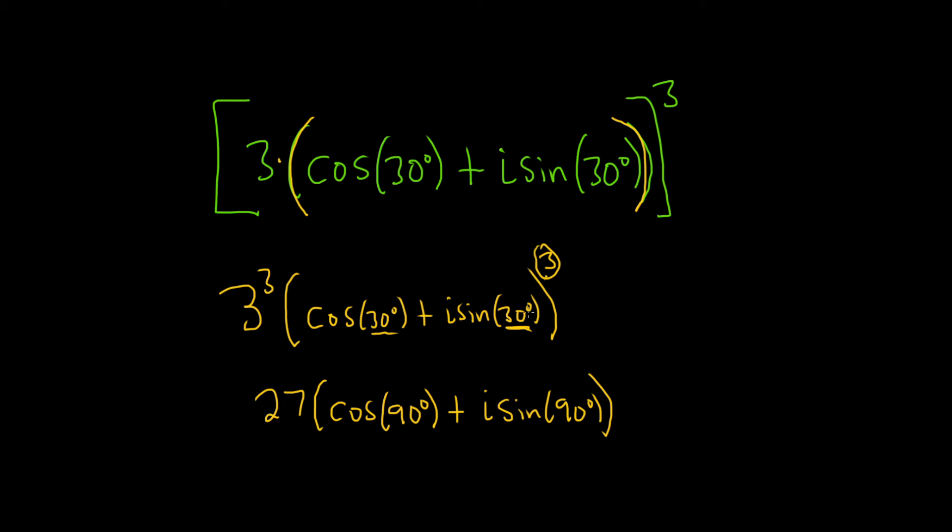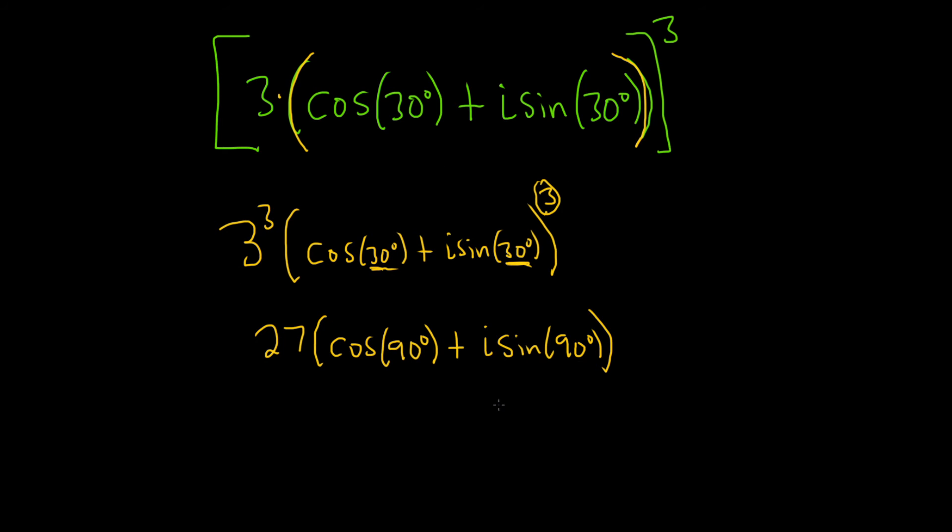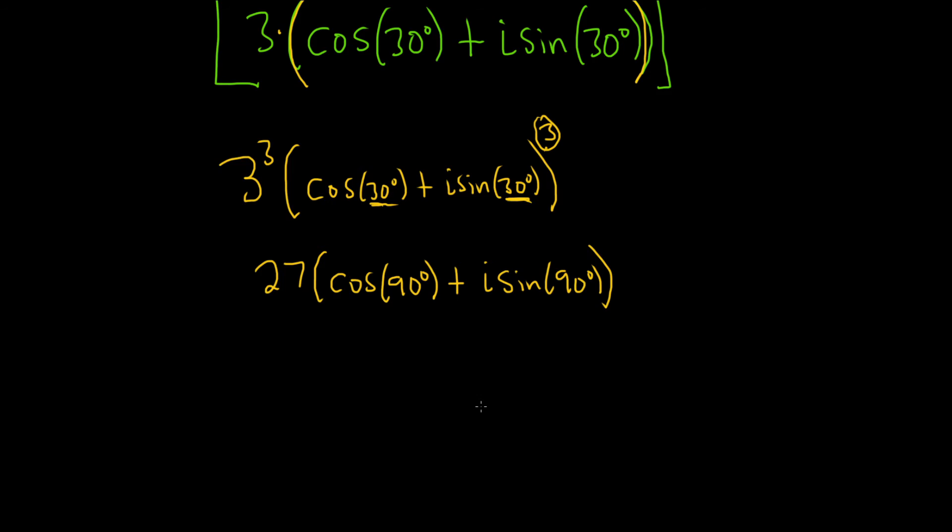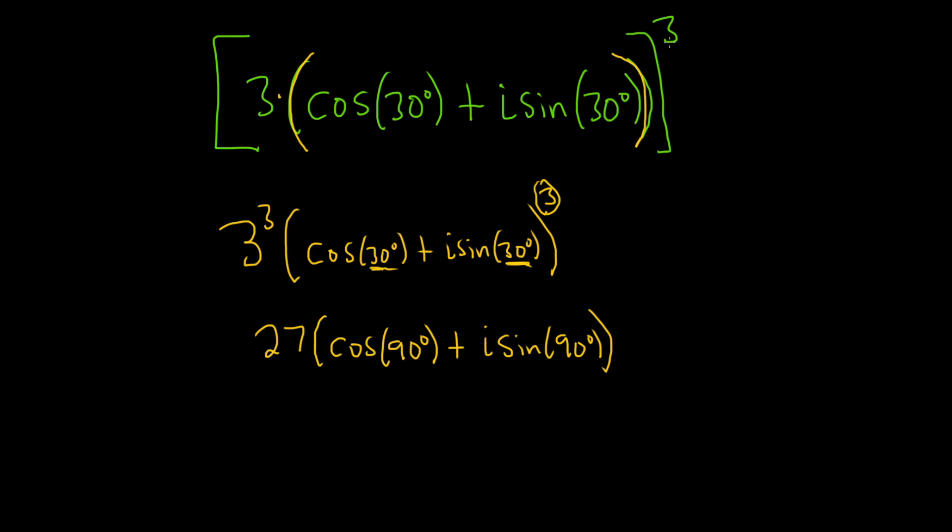So you just take the number and you multiply it by the angle, that always works. It's called De Moivre's Theorem, it's a very powerful strategy. So actually, De Moivre's Theorem says that you can go from here to here. So you cube the three and you do it all. So this is equal to 27.